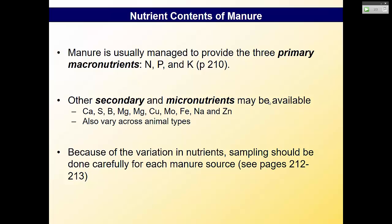There are other nutrients we're not regulating but should consider — secondary and micronutrients: calcium, sulfur, boron, magnesium, copper, molybdenum, iron, sodium, and zinc. These are all important plant nutrients. These are good benefits of manure to discuss when explaining why we want to allow manure application — the organic matter but also these secondary micronutrients are important.